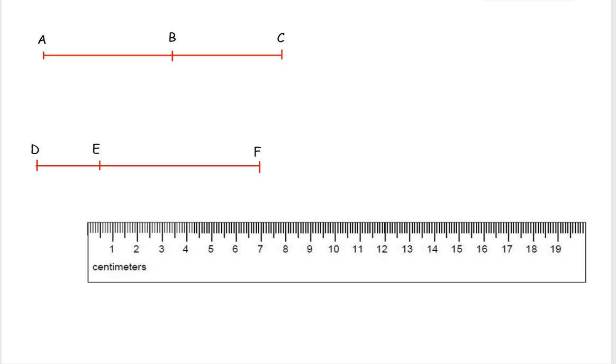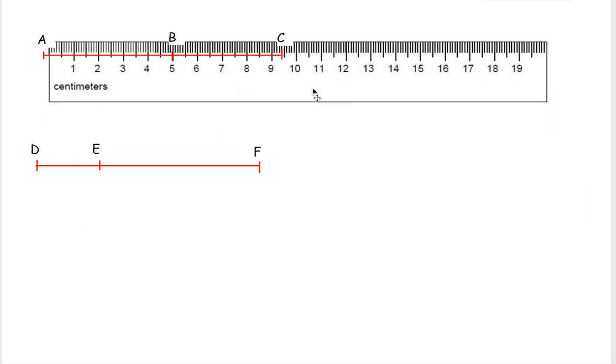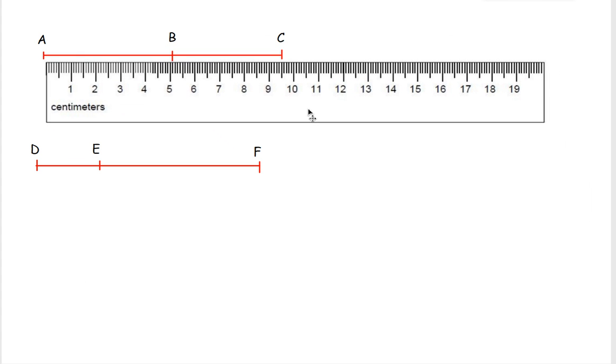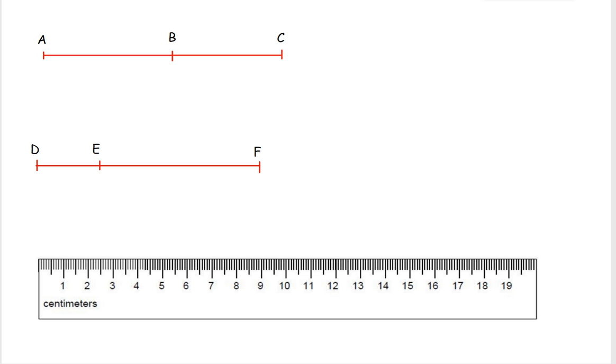Now here, if I know the lengths of two segments, I can find the length of the longer segment. So here I have ABC. And let's say that I know that length AB is 5.2 centimeters. And BC is 4.4 centimeters. To find the length of the whole line, I can add these together.